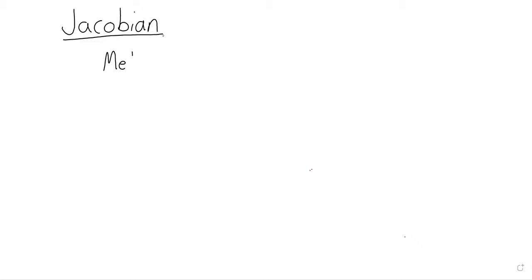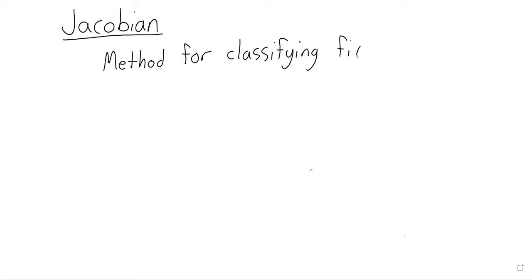Today we're going to discuss the Jacobian. This is going to be a pretty brief lecture, but the briefness of the lecture does not reflect the importance of the material. The Jacobian is one of the most important definitions in applied mathematics. It's what we've been building up to all this semester, and the Jacobian is a method for classifying fixed points.